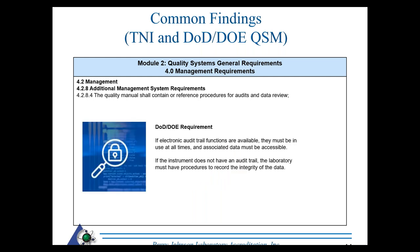The DOD/DOE quality manual must also document that an electronic audit trail function is available when reviewing or auditing data. Assessors will ask analysts to show that the electronic audit trail function is enabled on their instruments. For instruments without that capability, there must be some evidence of data integrity — either through the internal audit or data review process — with a procedure on how that's handled.